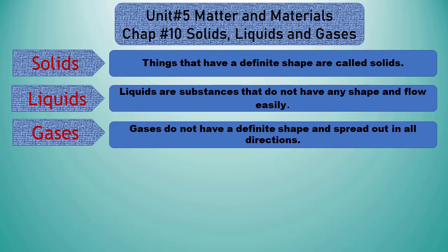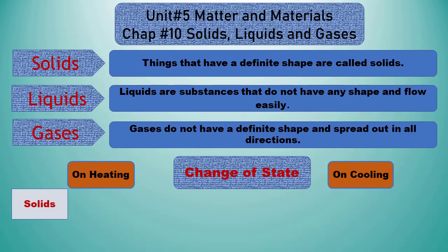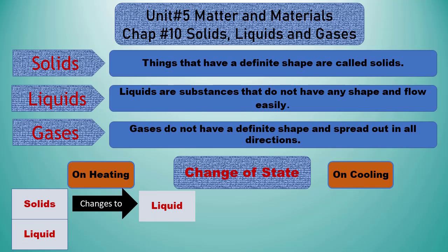Now students, we will see how these states can be changed from one to another by heating or cooling. First of all we see how state can be changed by heating. On heating, solid objects change to liquid and liquids change to gas. For example, if you look at an ice cube — an ice cube is solid.